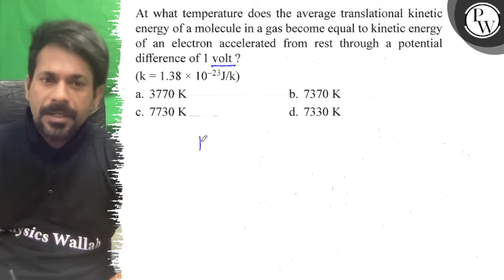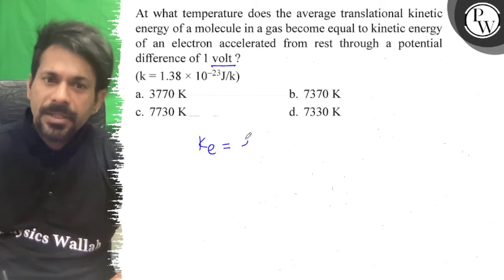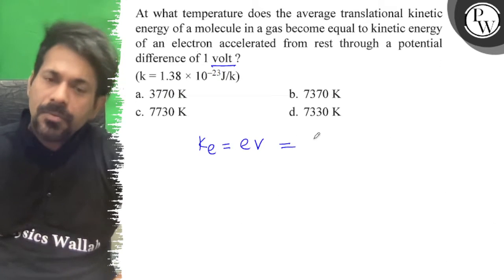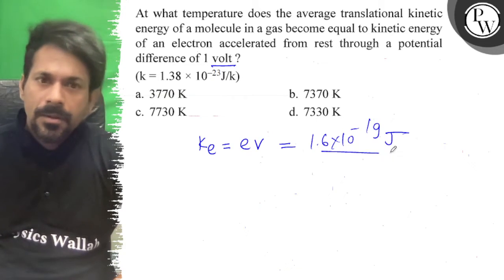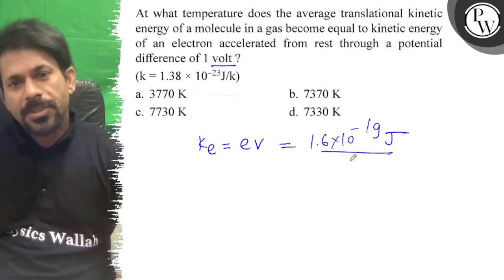So when the kinetic energy of electron comes out, the kinetic energy of electron is E into V, and that is equal to 1.6 into 10 to the minus 19 joules. So this is the kinetic energy.